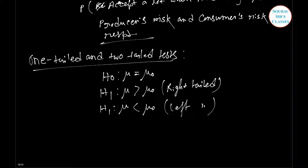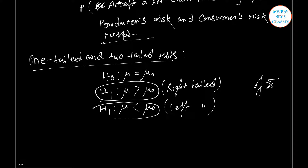In the right-tailed test, H₁: μ > μ₀, the critical region lies entirely in the right tail of the sampling distribution of x-bar. While for the left-tailed test, H₁: μ < μ₀, the critical region is entirely in the left tail of the distribution.